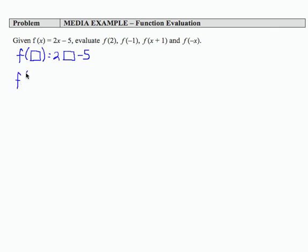So if I evaluate f(2), 2 is in the square. And so the way I'm going to indicate that square is using parentheses minus 5. So that becomes 4 minus 5 or negative 1.